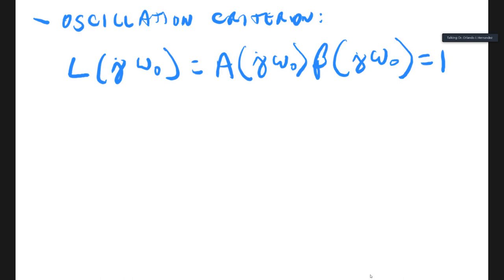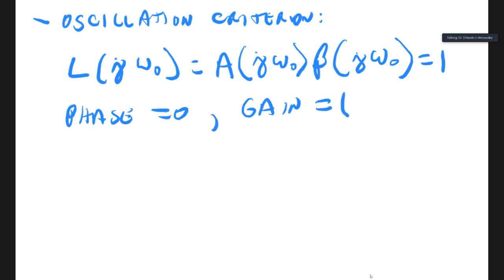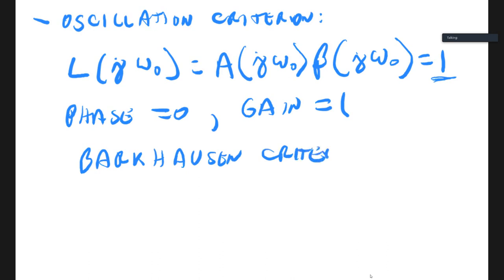Because the loop gain is a complex expression, this implies two things: the phase is zero and the magnitude of that expression is one. The phase is zero because this one is a real number. This is also called the Barkhausen criterion.